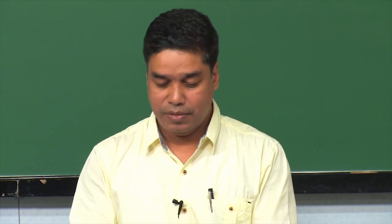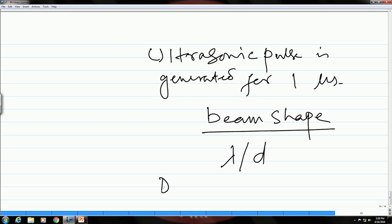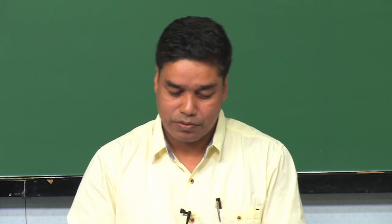As you keep increasing the diameter with respect to the wavelength, the beam becomes more and more directional. This is because of diffraction effects arising from constructive interference of sound waves coming out from different points of the same transducer.